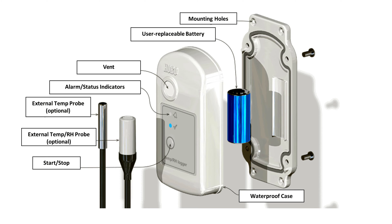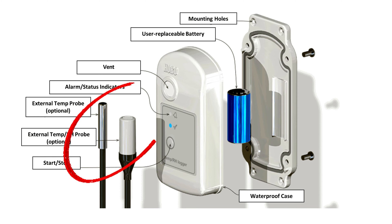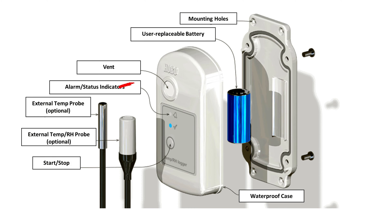Let's examine the main components of the Hobo MX2301A. Mounting holes at the top and bottom allow easy installation. The status LED blinks blue indicating logging status, while the red alarm LED signals alerts. The start button manages wake-up, logging, and functions. The external sensor measures temperature or humidity depending on the model. For the MX2301A, a vent conceals the humidity sensor, ensuring accurate readings.